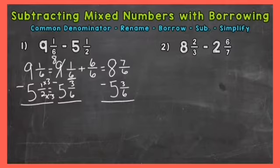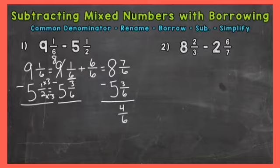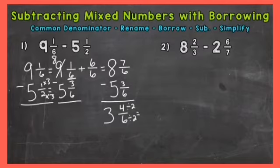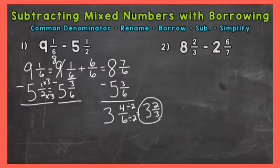Now we're able to subtract. Seven minus three gives us four-sixths, and the whole numbers: eight minus five is three. So that's our answer, but always check to see if you can simplify the fractional part. We have four-sixths — there's a common factor between the numerator and the denominator: two. So we can divide both by two in order to simplify. We end up with three and two-thirds as our simplified final answer.